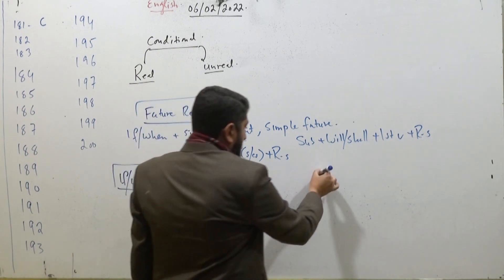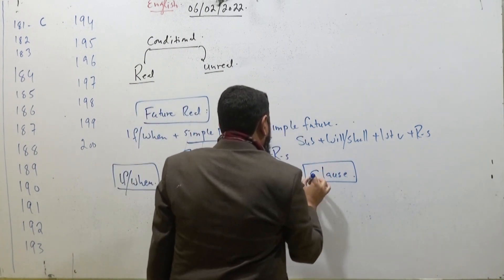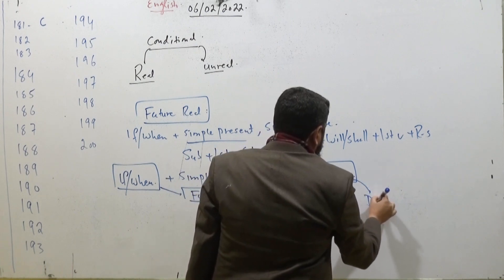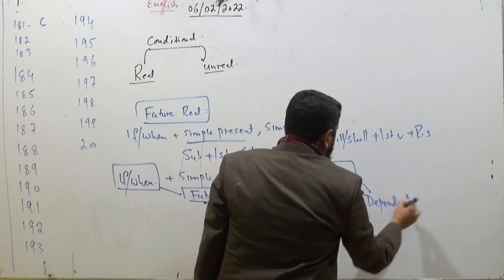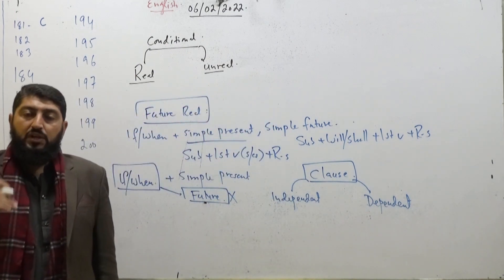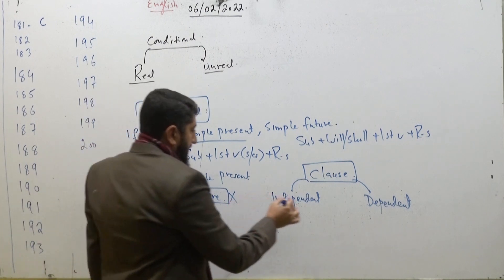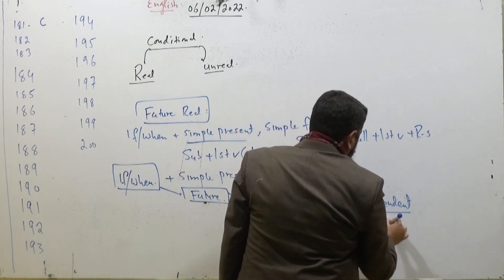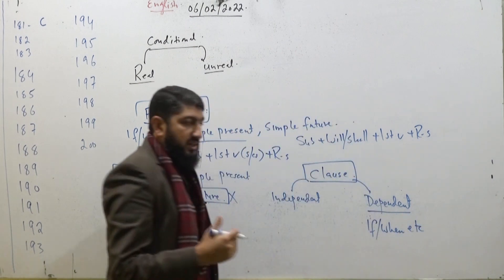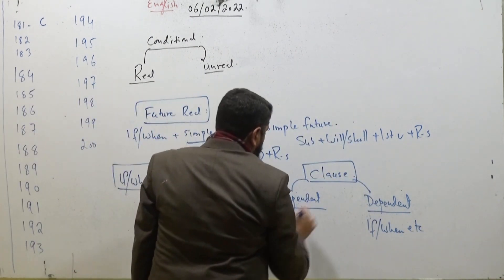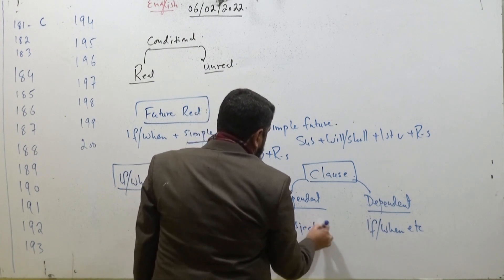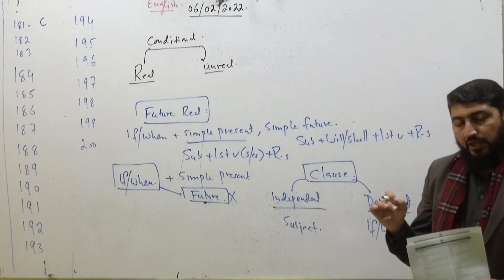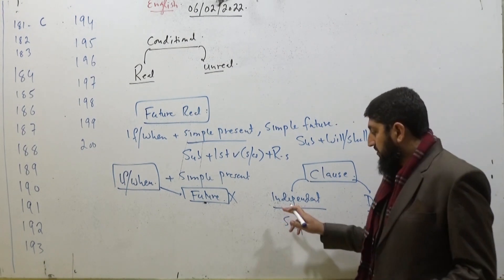We have two clauses: an independent clause, also called the principal/main clause, and the second one is a dependent clause, which we also call a subordinate clause. The dependent clause starts with 'if', 'when', or a subordinating conjunction, and the independent clause starts with the subject. Don't forget this point — if you are pertaining to future and it starts from a subordinating conjunction,